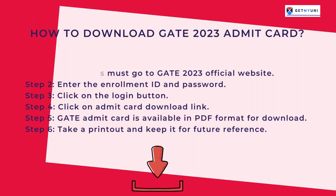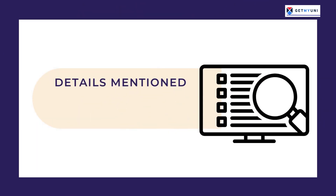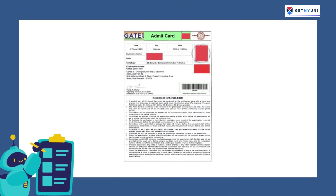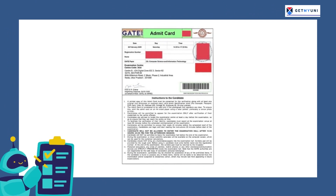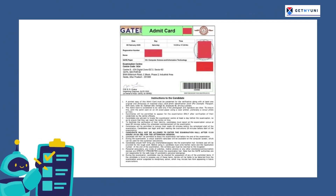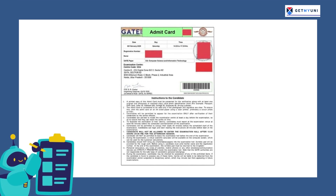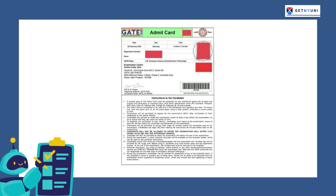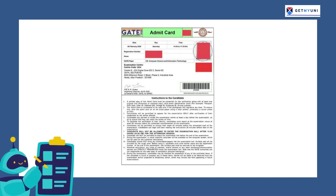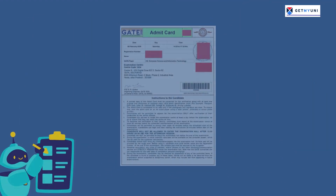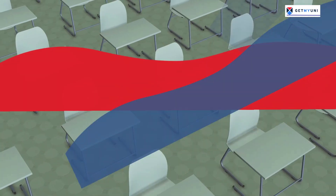After GATE ADMIT CARD 2023 is downloaded, candidates must ensure that the following information is mentioned: 1. Candidate's name — after a candidate's name has been entered on the application form, it will be printed. 2. Candidate signature as it appears on the GATE 2023 application form. 3. Photo — the photo uploaded during registration will be on the ticket. Therefore, one must ensure that the uploaded passport size photo is accurate and up to standard.